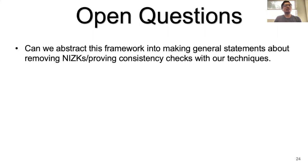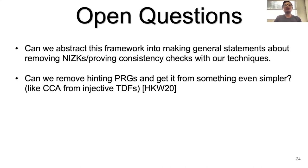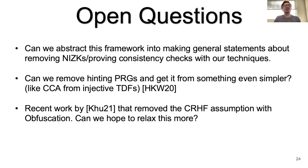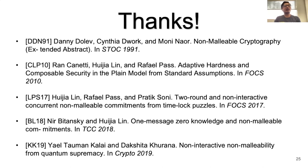Some open questions: Can we extend this framework of using hinting PRGs to remove NIZKs or proofs of consistency in other settings? Can we replace hinting PRGs with something simpler — for instance, a recent paper constructed CCA-secure public-key encryption from injective trapdoor functions. And can we replace the collision-resistant hash function assumption with something simpler? A recent work by Krana replaces it with obfuscation, but obfuscation may be too strong — can we relax this further? Thank you and have a good day.